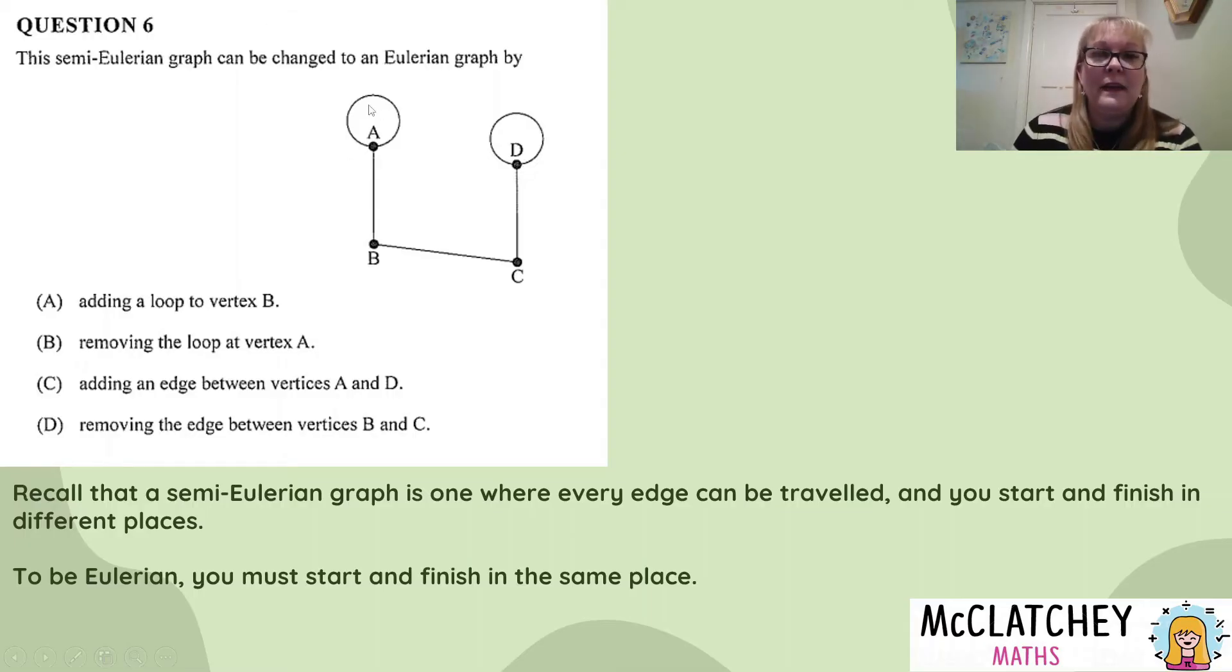If we remove the loop at A, it's the same situation. We're going to start here at the point. Instead of going around the loop, we'll just go straight to B, C, D, finish with the loop. We're still not getting back to A, so that eliminates option B as well.